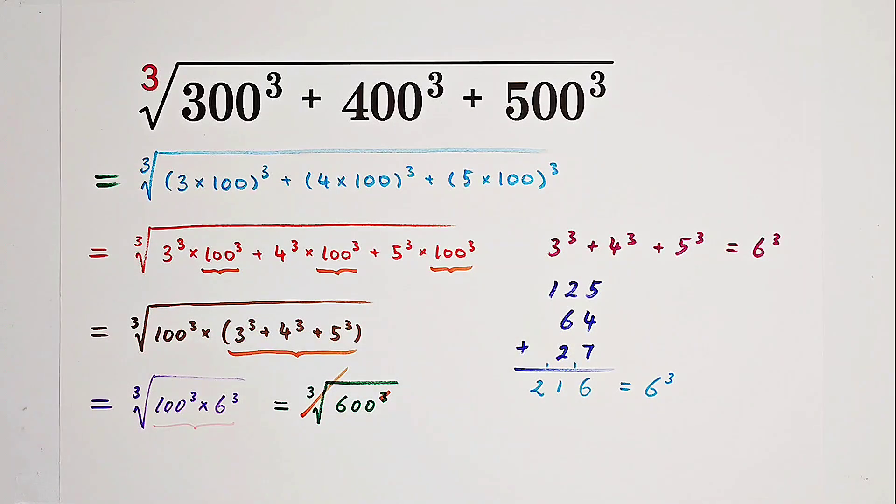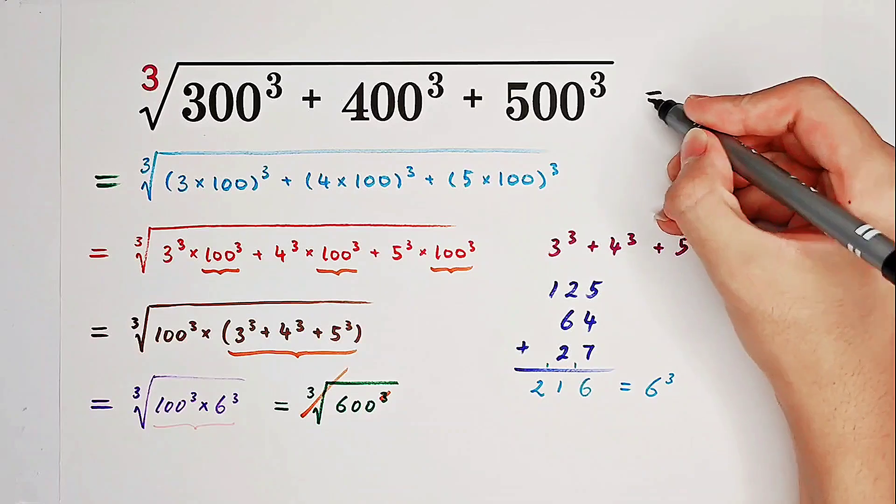Cube, the cube root, will cancel out each other. So the answer will be 600.